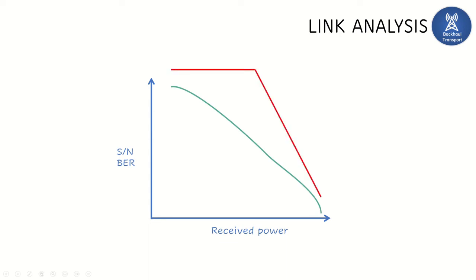And then we will calculate how the analog system and digital system behave for the BER values and the received power level. For example, analog signals, this is analog signal, and the red one is the digital signal.